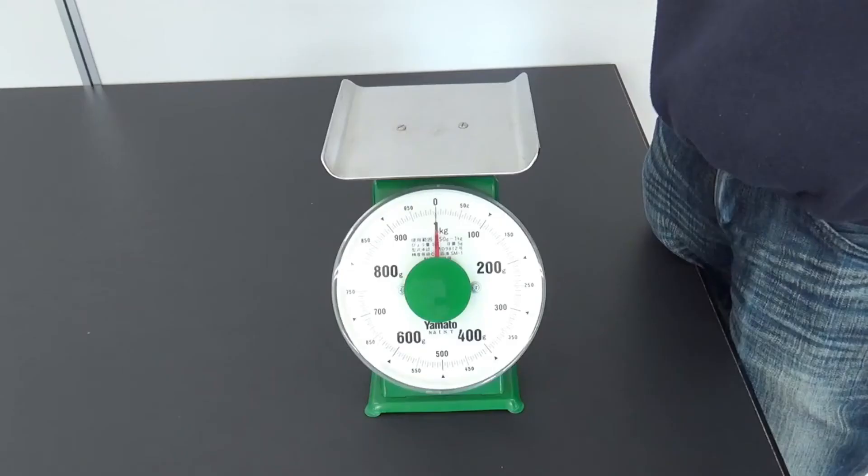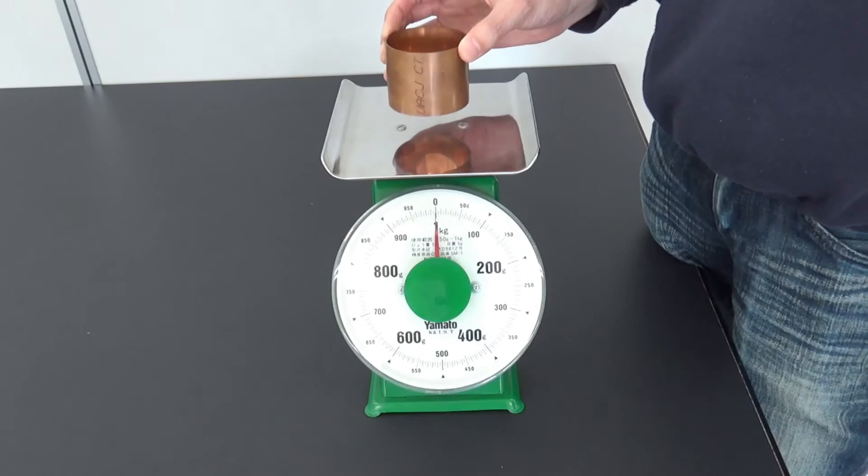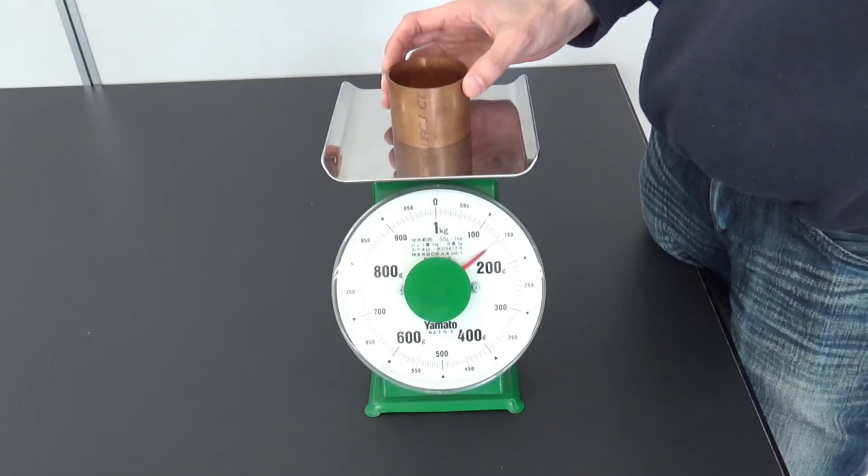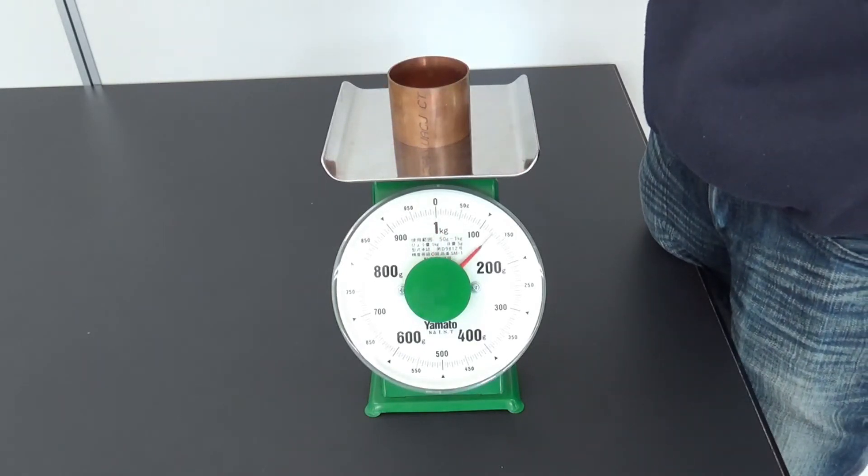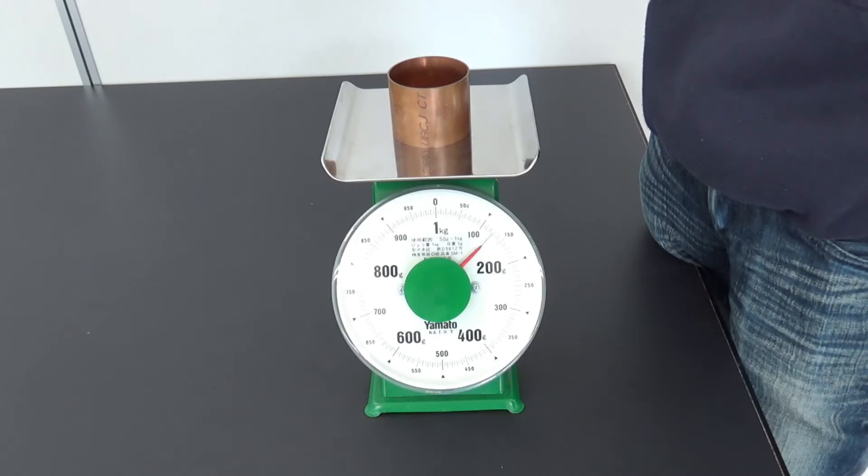When measuring the weight of a column or cylinder, place it as gently as possible. At first, the red needle will vibrate a little. When the vibration of the needle stops, read the value indicated by the needle.